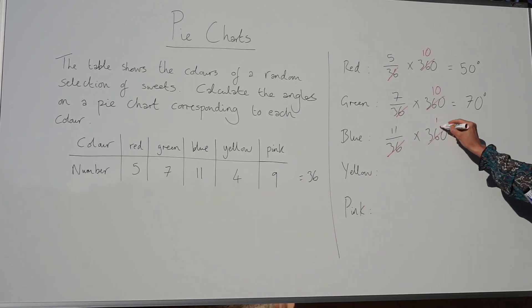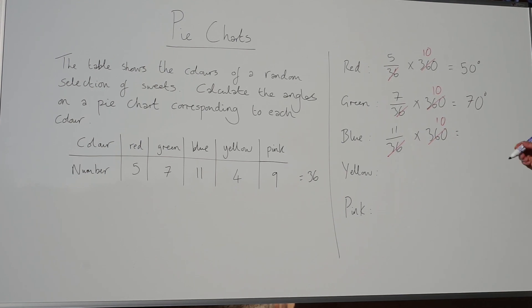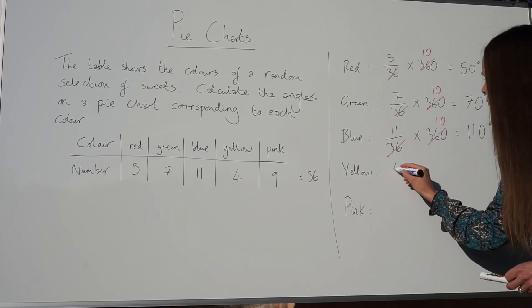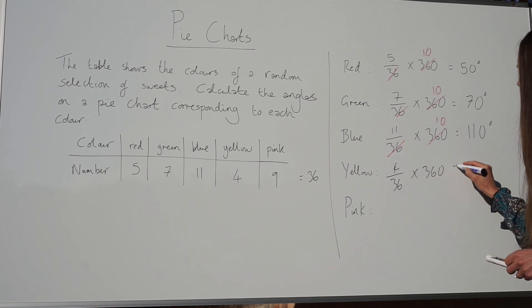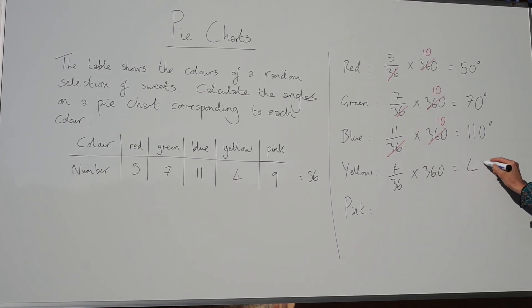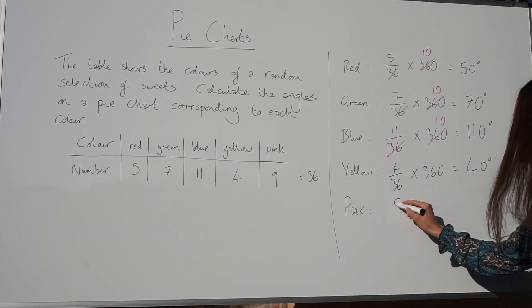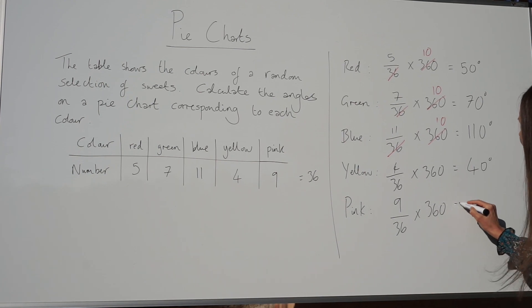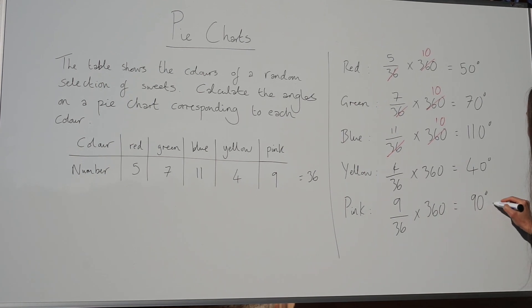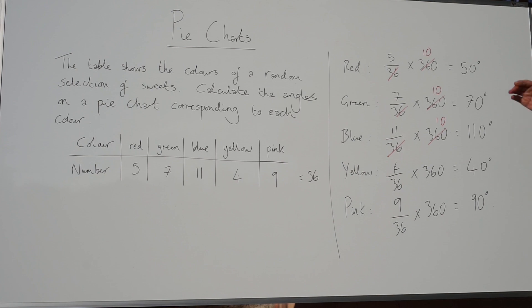The fraction of yellow sweets is 4 out of 36. If we times that by 360, we get 40 degrees. And for the last one, pink: 9 out of 36 multiplied by 360 is 90 degrees.